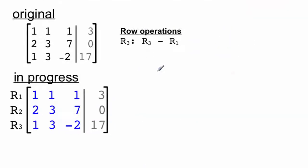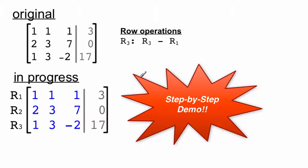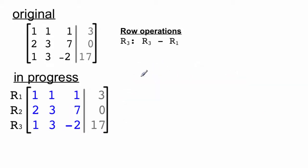Let's walk through the process of using row operations to go from an original matrix, and we're going to turn it into a fully row-reduced echelon form. Now, we're going to keep track here with the in-progress matrix. And right now, they are both the same because we haven't done anything yet. Our first row operation is going to be row 3 becomes row 3 minus row 1.